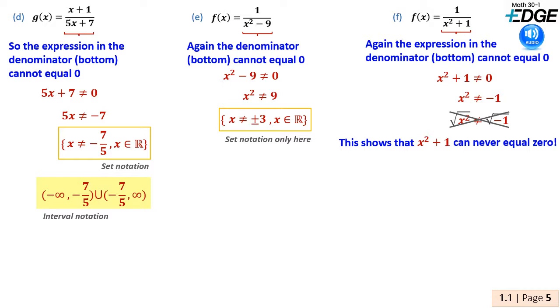Often, a step like this would cause us to believe there is no solution. But in this example, it's not that there's no solution, it's there's no solution as we search for a restriction or non-permissible value. Otherwise said, there's no way that x squared plus 1 could equal zero, and so it actually has no restrictions.